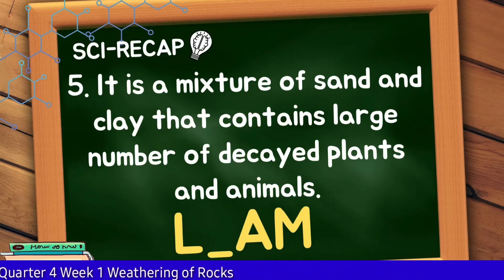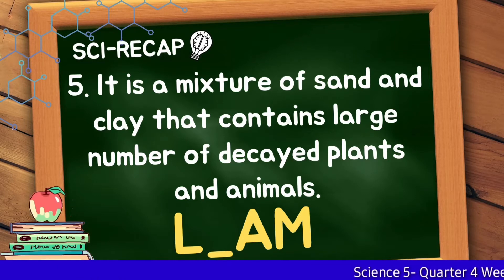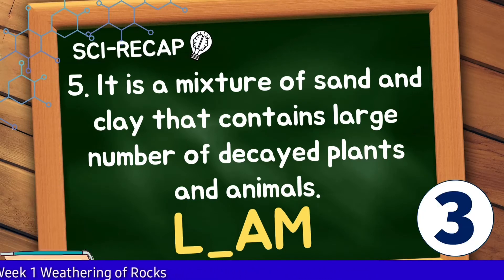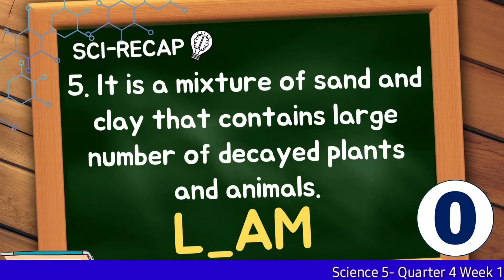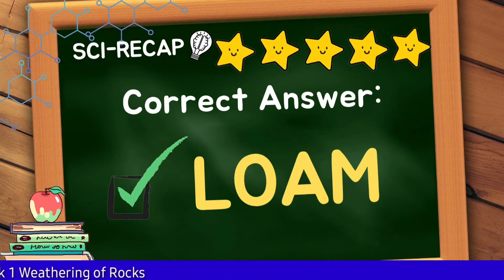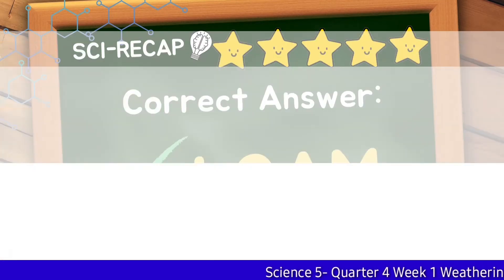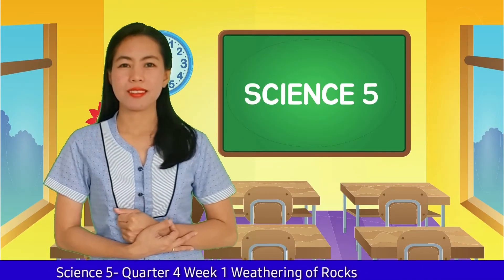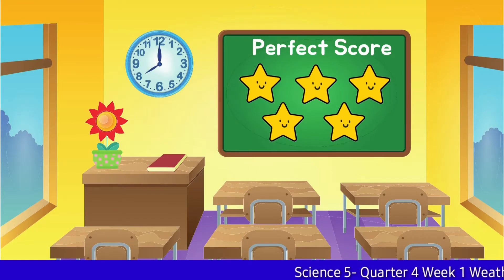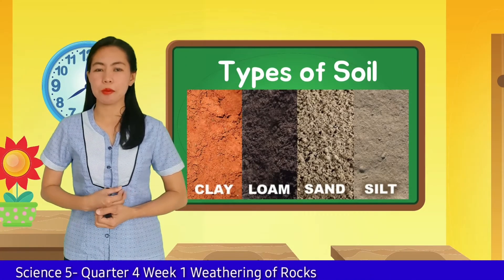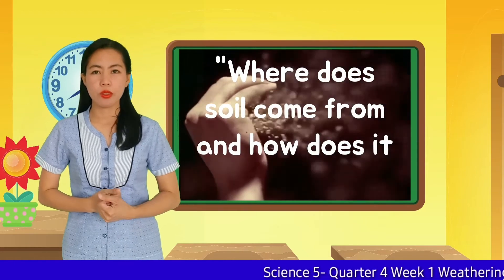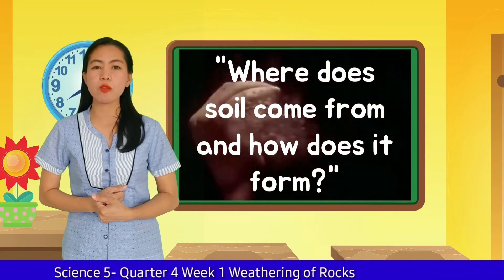Number 5: It is a mixture of sand and clay that contains a large number of decayed plants and animals. Good job! The correct answer is loam. You have another one star for that correct answer. I hope all of you get the perfect score. You already know the different types of soil. But where does soil come from and how does it form? You will know the answer later as we begin to discuss the lesson.